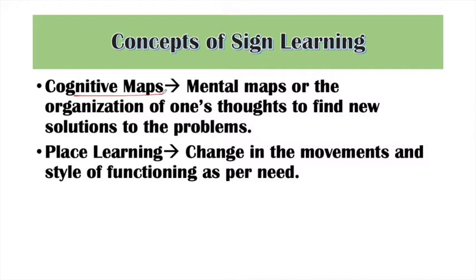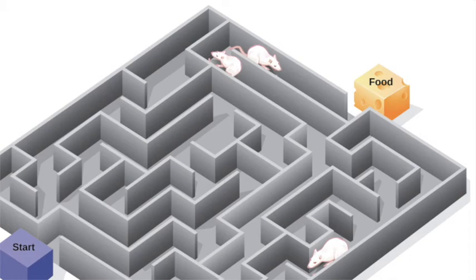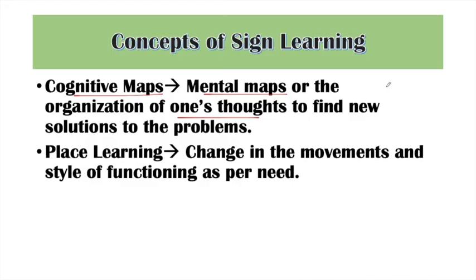The next concept is Cognitive Maps — the mental maps, mental images, or organization of one's thoughts to find new solutions to problems. The learner stores a mental picture of the stimuli received from the environment. In the case of the rat in the maze, it didn't know which way would lead where, but it received stimuli from the environment — whichever path was open, it went there — and kept storing those pictures in its mind. These are called cognitive maps.